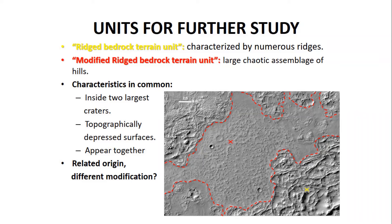This modified rich bedrock terrain unit is deeply eroded, and its limits are very well defined. We think that its origin could be related with the action of some fluid. These two morphologies happen together inside both impact craters, suggesting they could share the same origin. We are currently evaluating the possible formation mechanisms, but we are open to suggestions.